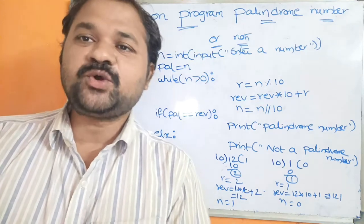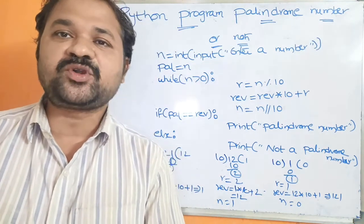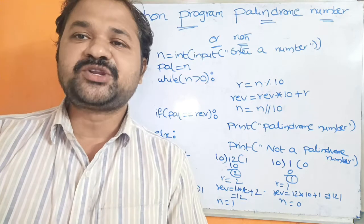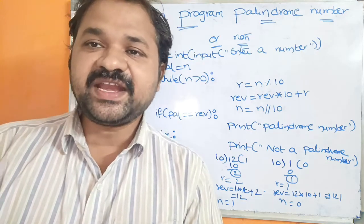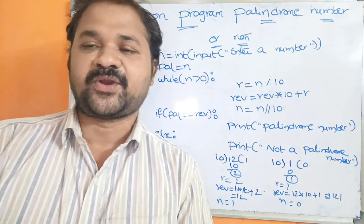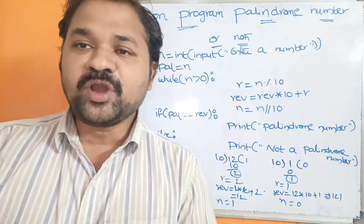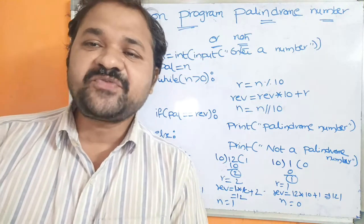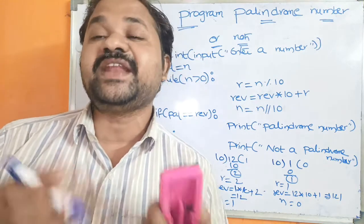In this video we are going to discuss a Python program to check whether a given number is a palindrome number or not. A palindrome number means the reverse of a number is equal to the given number.